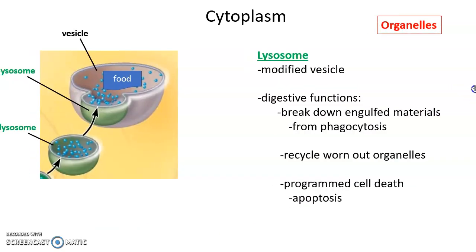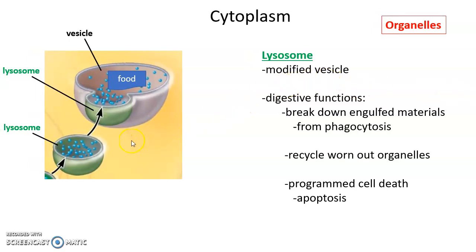Lysosomes are produced by the Golgi apparatus. They are modified vesicles that hold digestive enzymes. These can be used to break down materials brought in by phagocytosis — for instance, food particles can be broken down by the digestive proteins in the lysosome. Lysosomes can also fuse with worn-out organelles to break them down and recycle them. And sometimes lysosomes are involved in apoptosis — programmed cell death. For example, when we were embryos we had webbing between our fingers; as we developed into fetuses, that webbing was broken down via apoptosis.